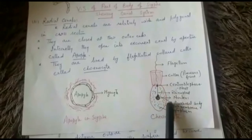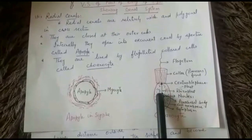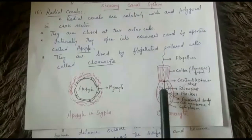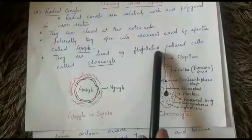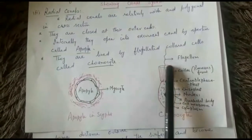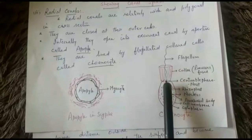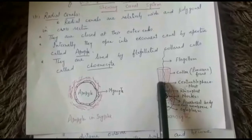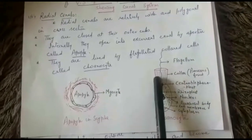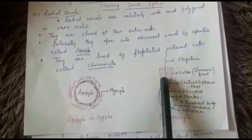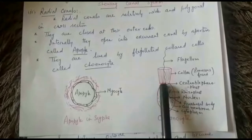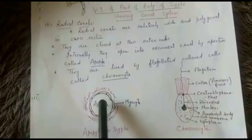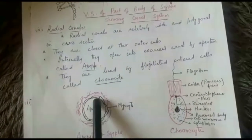Each choanocyte is an oval cell which contains a nucleus. Just above the nucleus there lies a minute granule known as the parabasal body. At the other end of the oval cell there lies another granule known as the centrioblépharoplast, from which the flagellum arises. The base of the flagellum is covered by means of a collar, and the surface of the collar is sticky. The centrioblépharoplast and parabasal body are connected by a fiber known as the rhizoplast. The apopile is present in the center of the diaphragm and is bounded by modified pinacocytes known as myocytes.